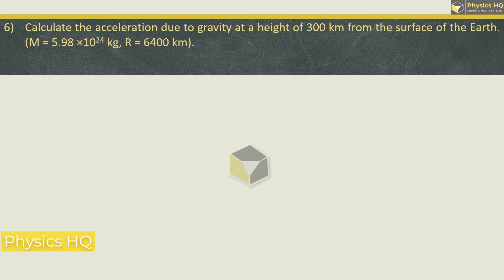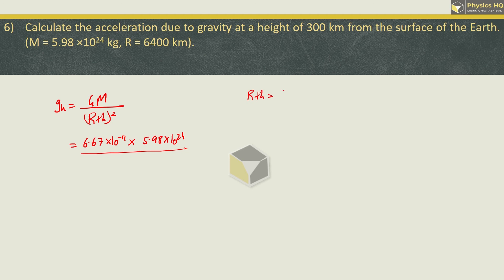Next let's see. Calculate the acceleration due to gravity at a height of 300 km from the surface of the earth. Gravity at a height is given by Gm divided by (r plus h) the whole square. G value is 6.67 into 10^-11. Mass of earth is 5.98 into 10^24. Divided by r plus h: r is 6400, h is 300, so this becomes 6700 km. In meters this is 6.7 into 10^6.